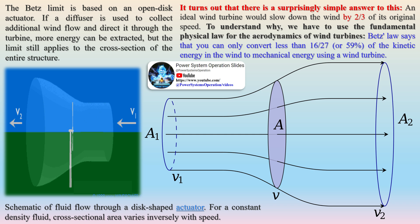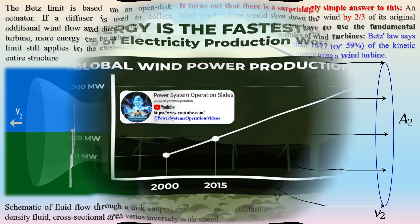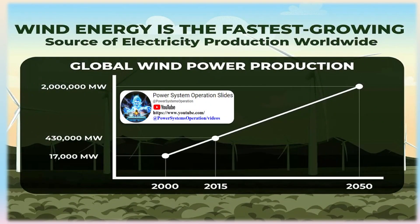Betz's law significantly influences the design of wind turbines by setting a theoretical efficiency limit. Since Betz's law states that no wind turbine can capture more than 59.3 percent of the kinetic energy in wind, designers aim to approach this limit as closely as possible. Modern turbines typically achieve 70 to 80 percent of the Betz limit.